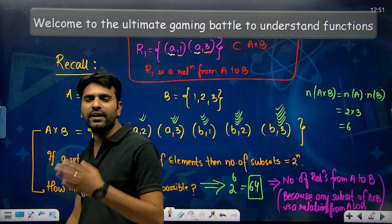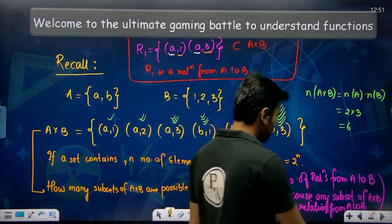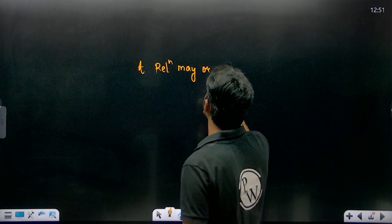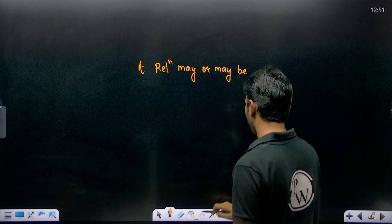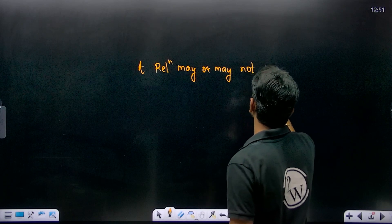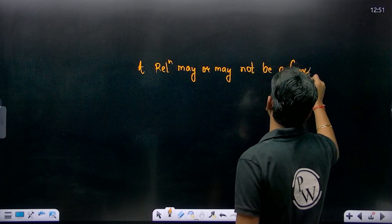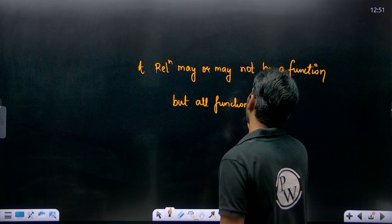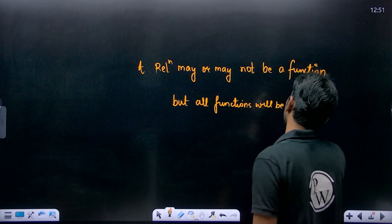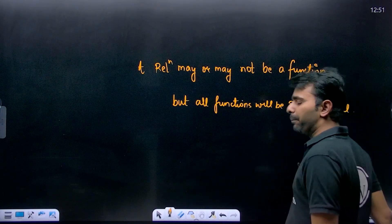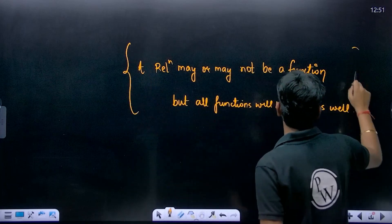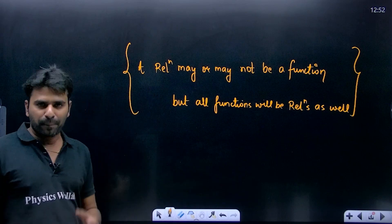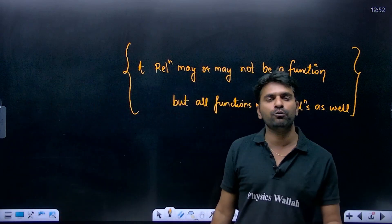Now we are learning functions. A relation may or may not be a function, but all functions will be relations. There can be some relations that are not functions, and some that are. Every function is guaranteed to be a relation.